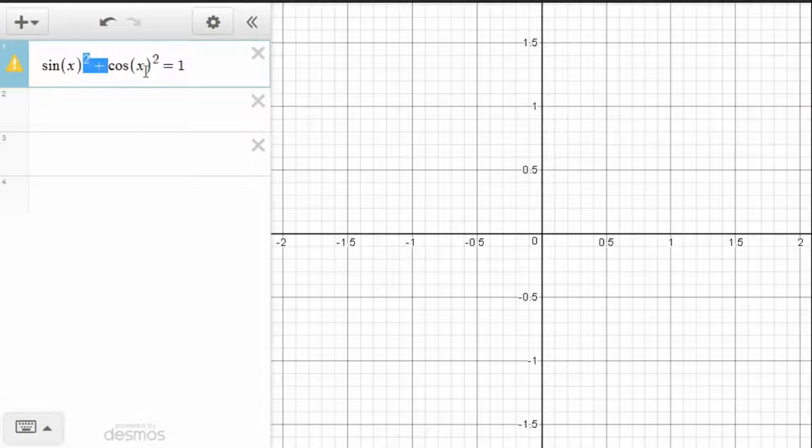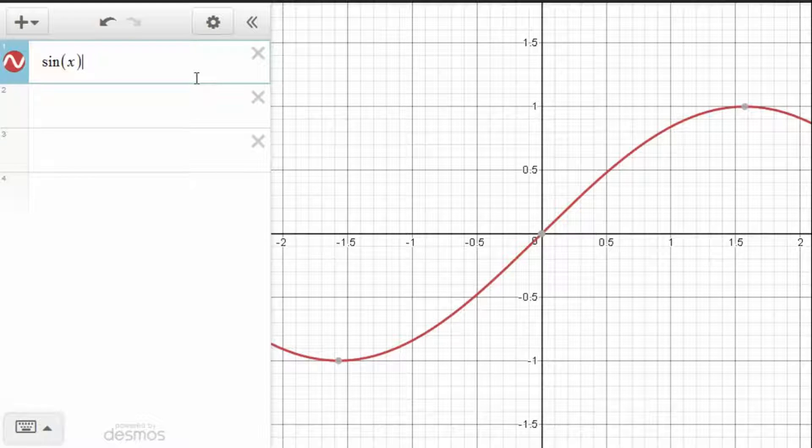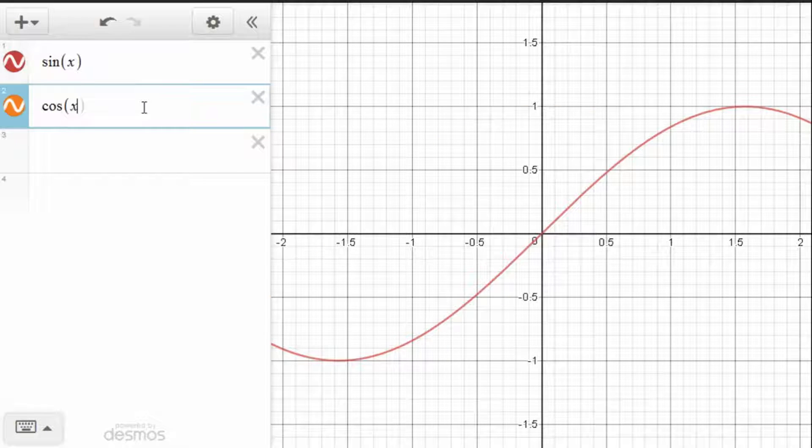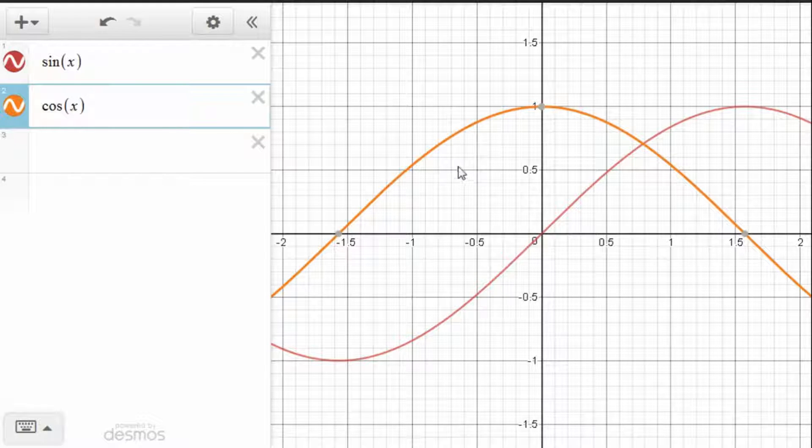So let's start by looking at the graph for sine of x and comparing that with the graph for cosine of x. We see that when cosine of x is equal to 1, that sine of x is indeed equal to 0. And 0 squared plus 1 squared would be 1, so that would work.